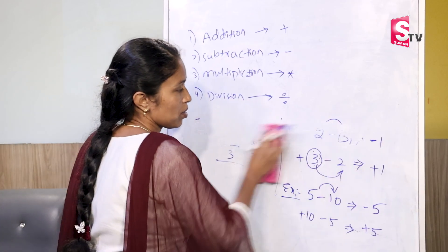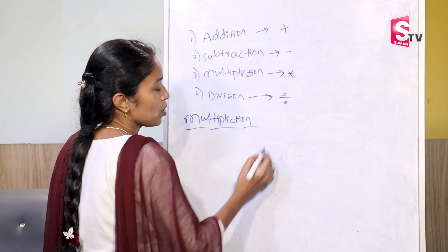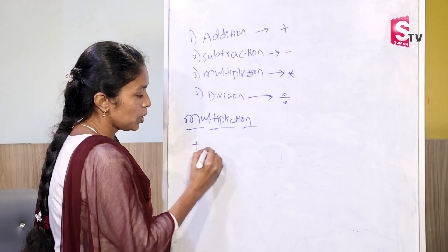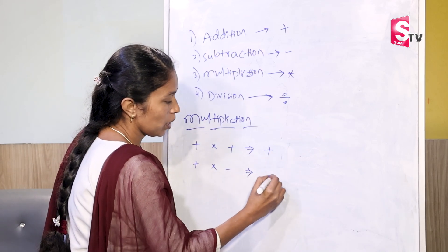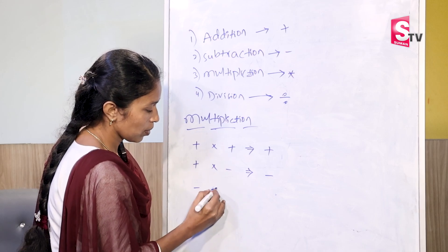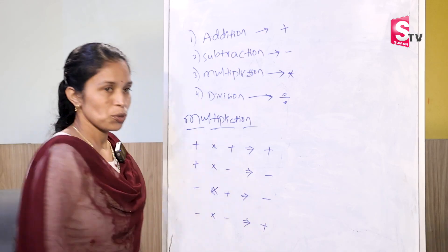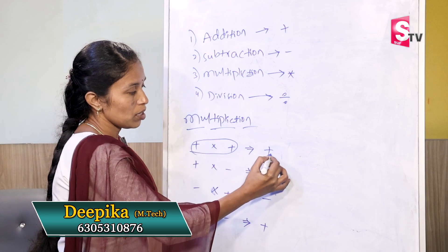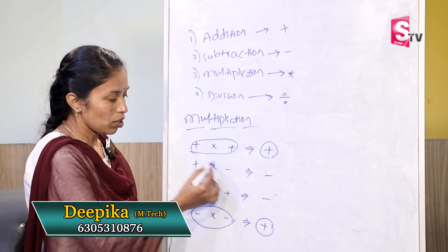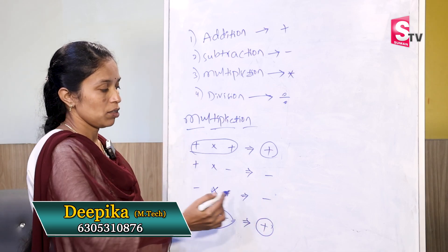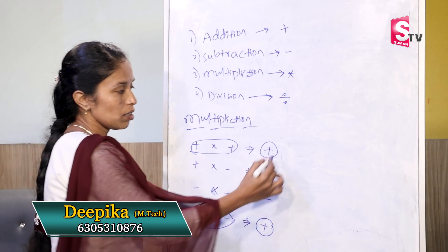Next, we move to multiplication. For multiplication, we have 4 basics: plus into plus equals plus; plus into minus equals minus; minus into plus equals minus; minus into minus equals plus. This is the basic fundamental concept.